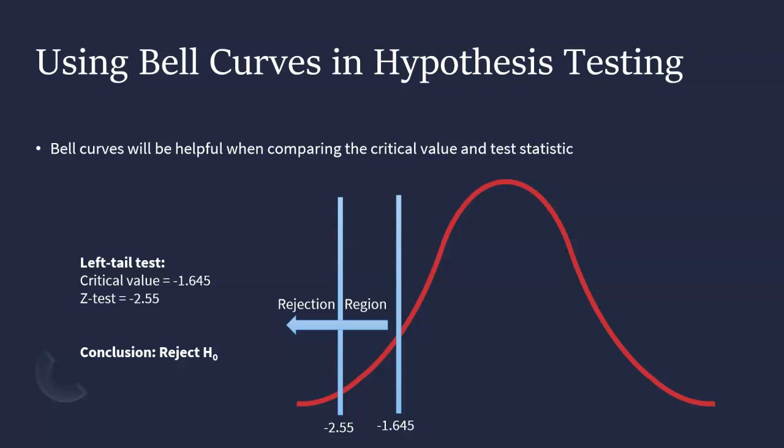And the same kind of thing can happen here for a right-tailed test as well. We would just have the critical value and to the right being our rejection region.